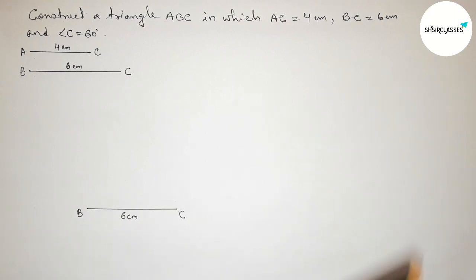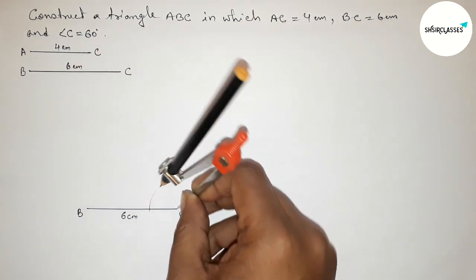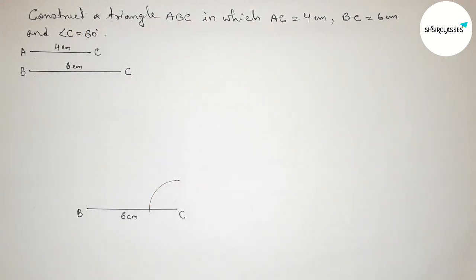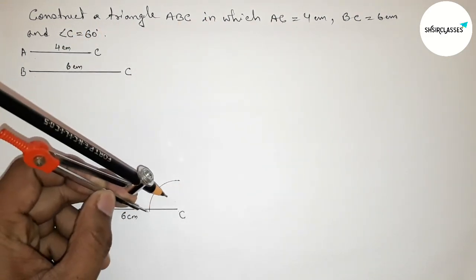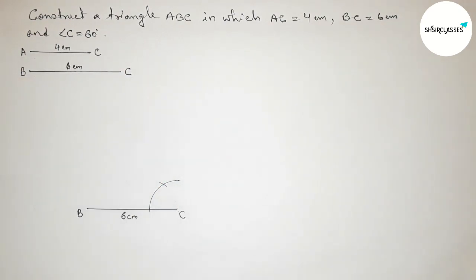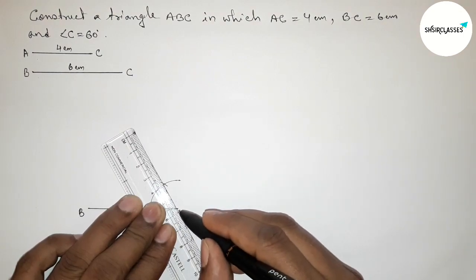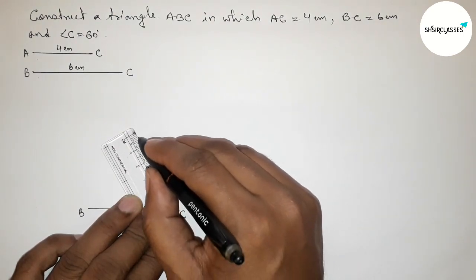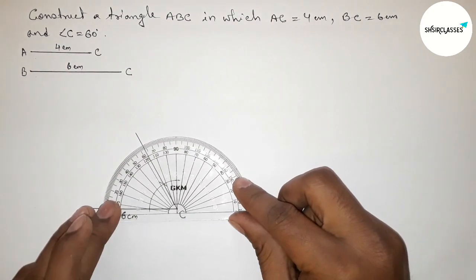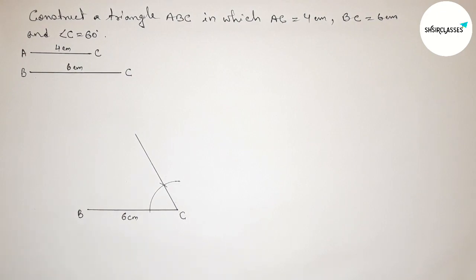Now drawing a 60 degree angle at point C. Putting the compass on point C, taking any length and drawing an arc. Now putting the compass at the arc intersection, taking the same length and cutting another arc. Joining this line.